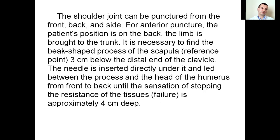The shoulder joint can be punctured from the front, back, and side. For anterior puncture, the patient's position is on the back with the limb brought to the trunk. It is necessary to find the coracoid process of the scapula 3 cm below the distal end of the clavicle. The needle is inserted directly under the process and led between the process and the head of the humerus from front to back until the sensation of tissue resistance stops, approximately 4 cm deep.